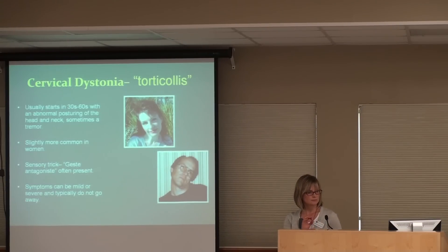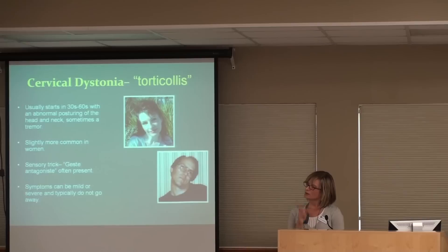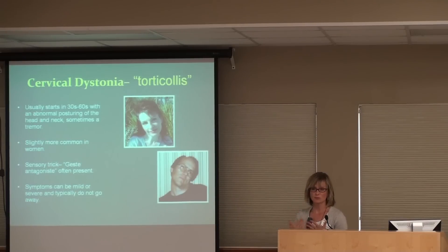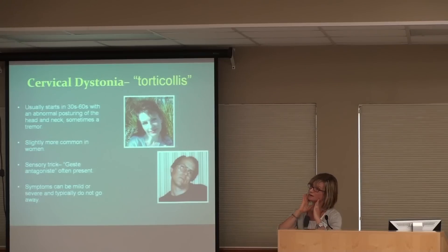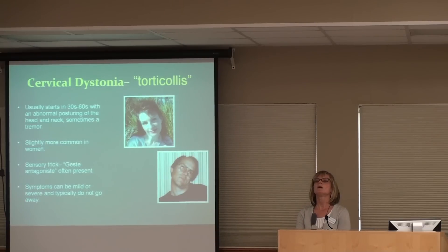An important feature of cervical dystonia is something called a sensory trick. Many people with this condition develop this feature where their head might be tending to twist to the side, but if they lightly touch their chin, it helps them straighten the head out slightly — at least momentarily. They don't push their chin; it's really just a sensory trick. This condition actually comes from a brain signaling issue where your brain doesn't integrate sensory information normally. Sometimes people put their hand on their chin, or if they lean their head lightly against a wall, it helps straighten their neck out momentarily.